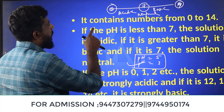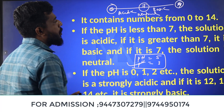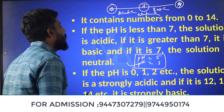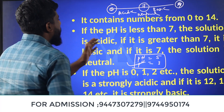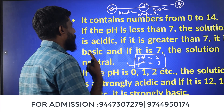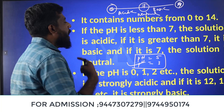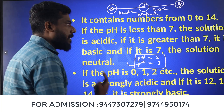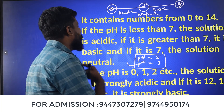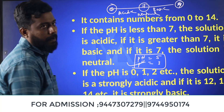The pH scale contains numbers from 0 to 14. If the pH is less than 7, the solution is acidic. If it is greater than 7, it is basic. If it is 7, the solution is neutral.